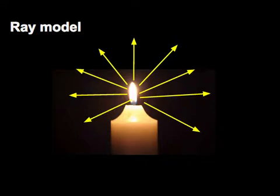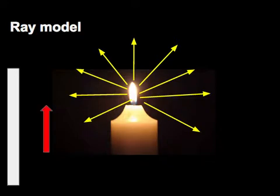However, if we're going to investigate something in particular it's difficult to draw the rays in all directions. In reality we're just interested in a few rays that are going to enable us to identify the thing that we're interested in.